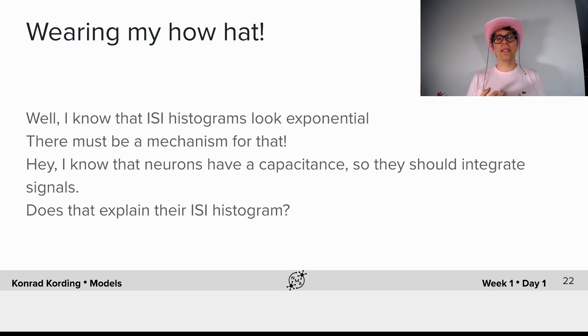What's the logic that someone could take for a how model for this? Well, I know that inter-spike interval histograms look exponential. There must be a mechanism for that, and so I believe that neurons produce that.